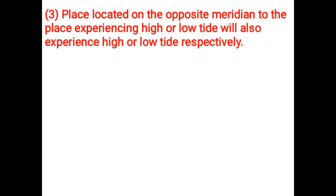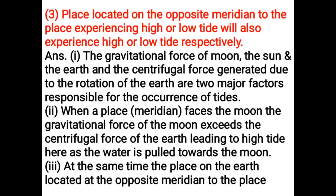A place located on the opposite meridian to the place experiencing high or low tide will also experience high or low tide respectively. The gravitational force of the moon, the sun, and the earth, and the centrifugal force generated due to the rotation of the earth are the two major factors responsible for the occurrence of tides. When the place meridian faces the moon, the gravitational force of the moon exceeds the centrifugal force of the earth, leading to high tide as the water is pulled towards the moon.